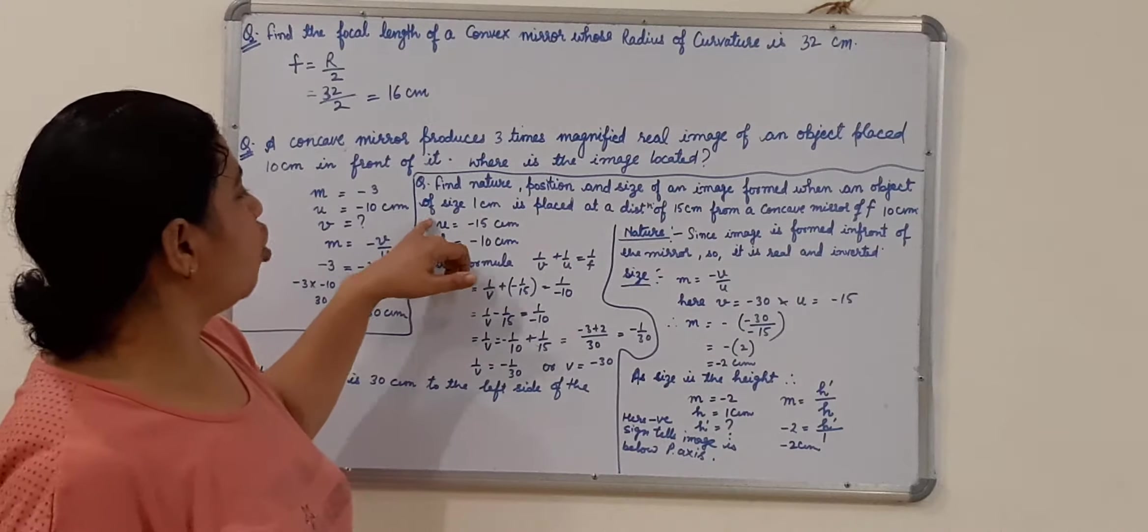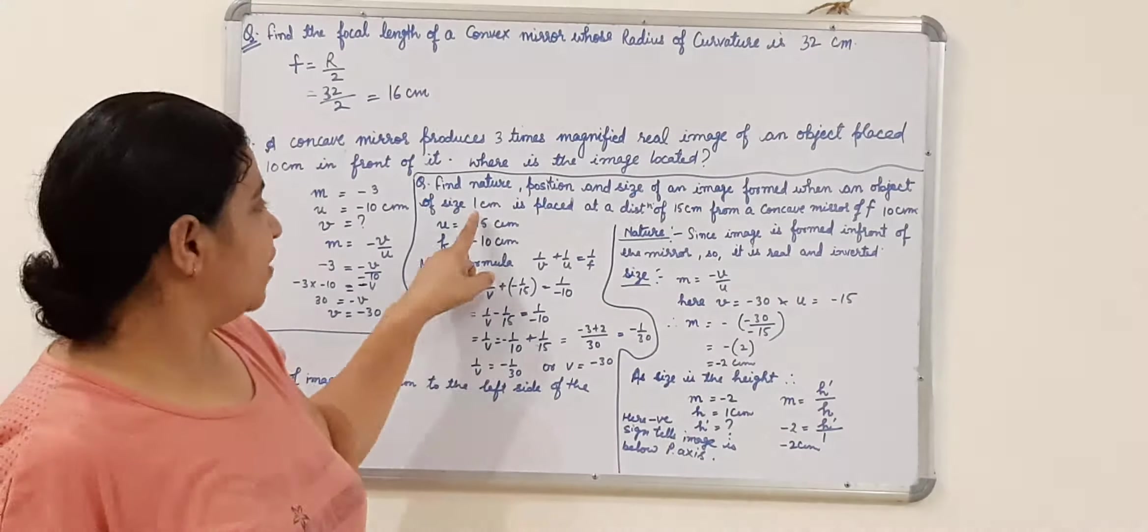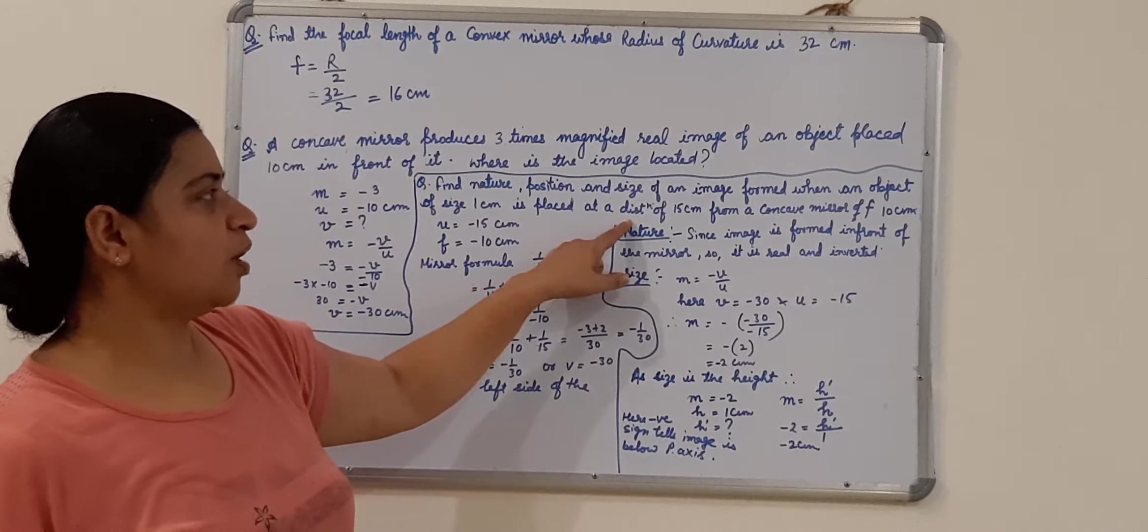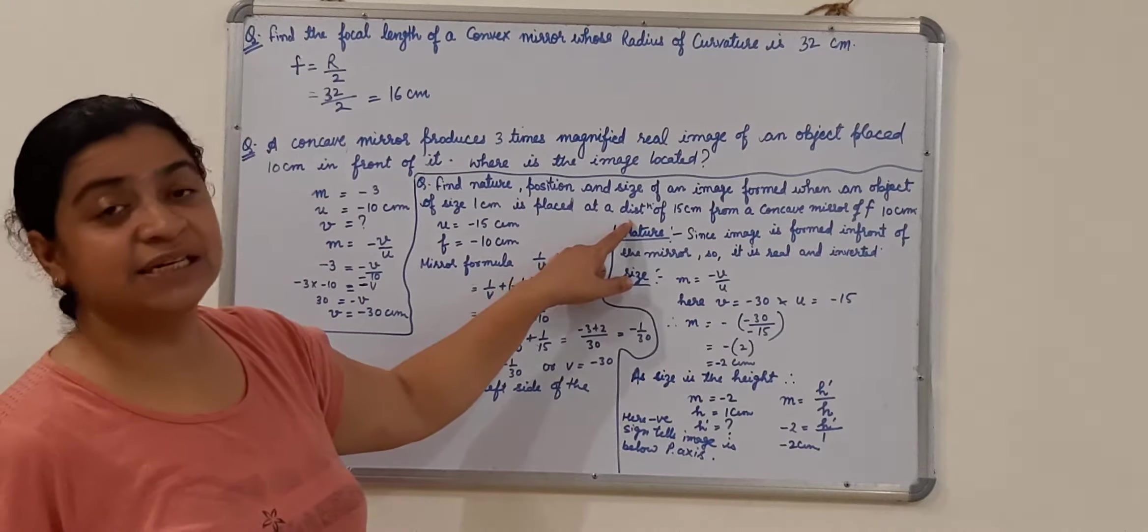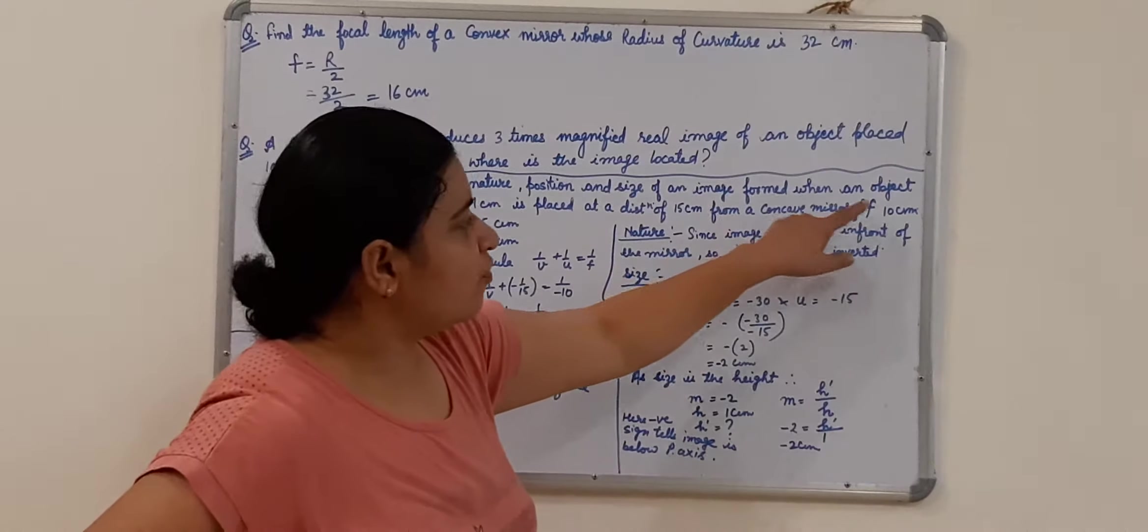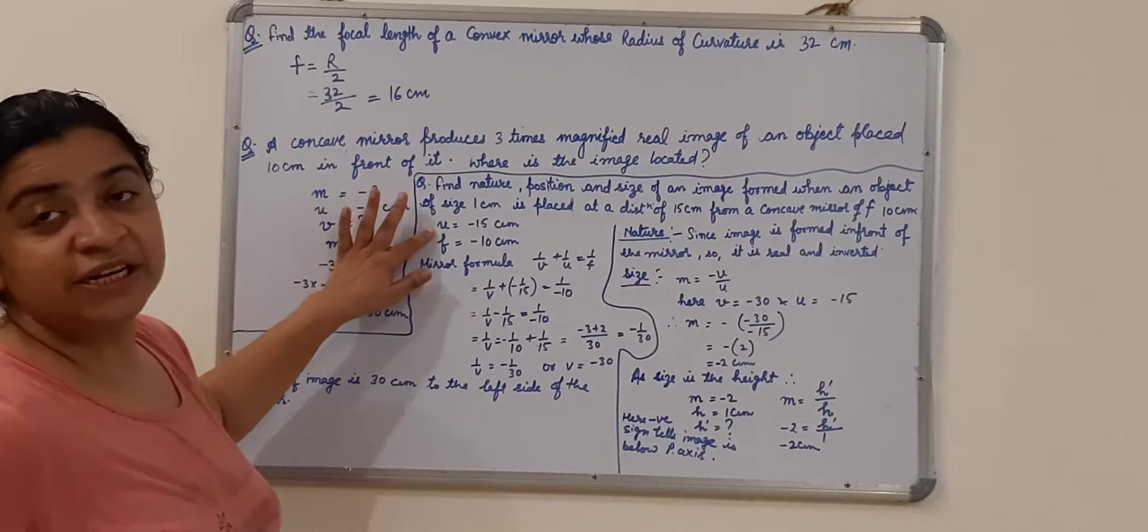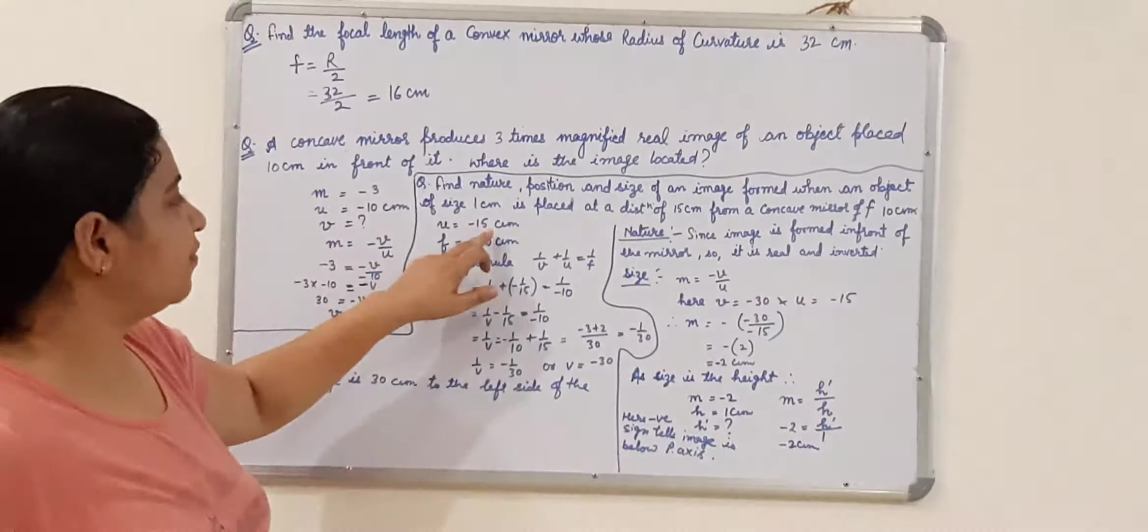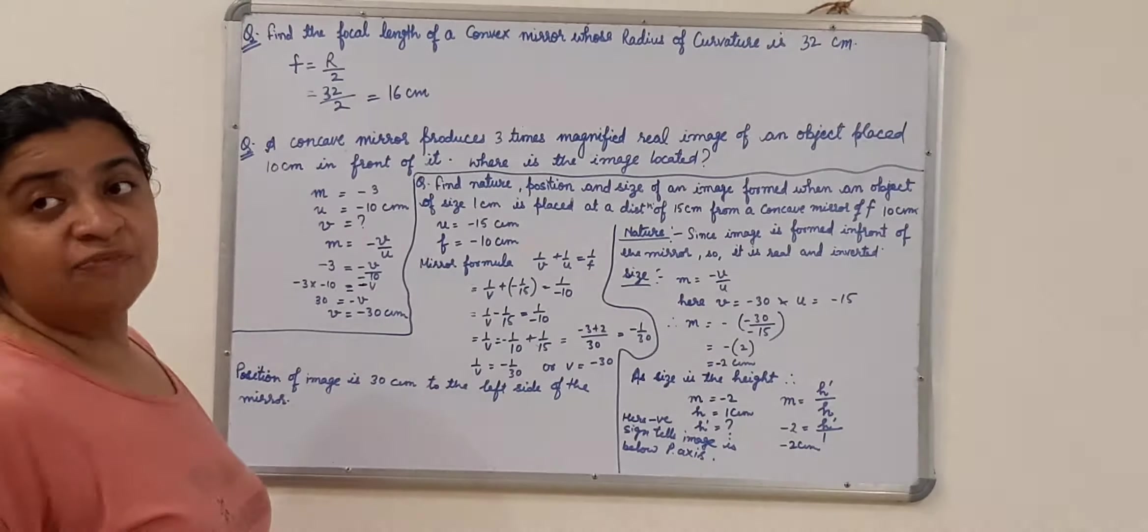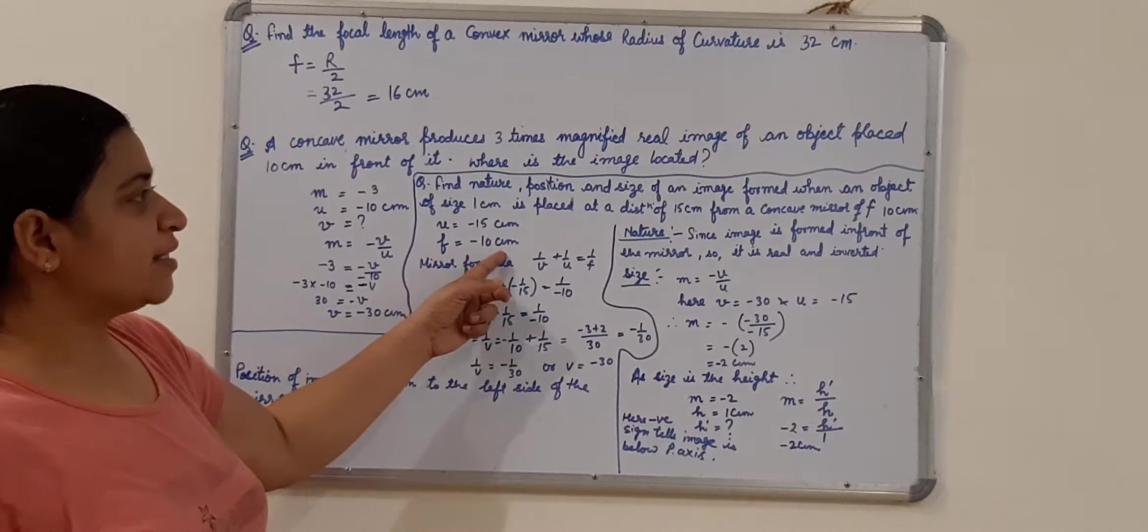Size of an image formed when an object of size, object size that is h 1 cm, is placed at a distance of 15 cm from a concave mirror of focal length 10 cm. So U, object distance always negative, that is minus 15 cm. Focal length of a concave mirror is always taken to be negative. So F is equals to minus 10 cm.